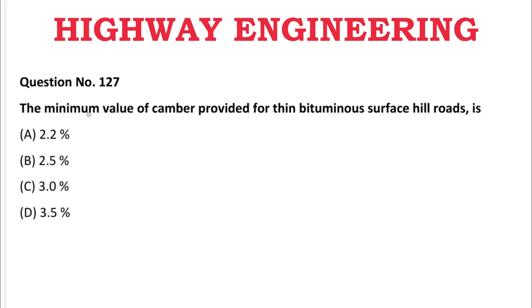Next question: The minimum value of camber provided in thin bituminous surface hill roads is — A: 2.2%, B: 2.5%, C: 3.0%, D: 3.5%. The correct answer is B, 2.5%.